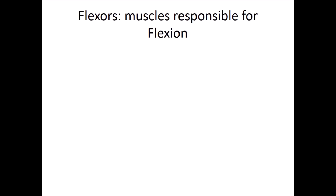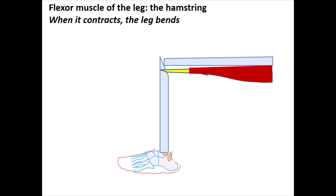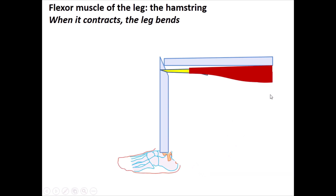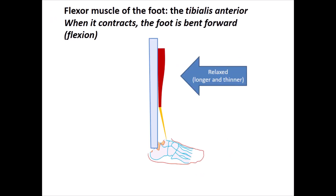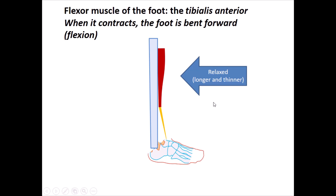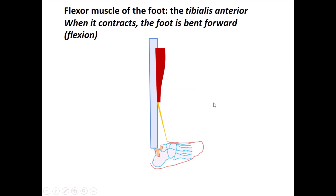Let's make sure you got it. Flexors are the muscles responsible for flexion. For the leg, the flexor is the hamstring at the back. When it contracts, it becomes shorter and your leg is pulled in this direction — so the leg will bend. For the foot, the flexor is the tibialis anterior in the front. When relaxed, it's longer and thinner; when it contracts, it pulls the foot upwards.